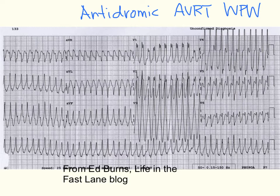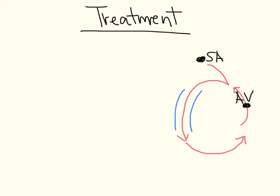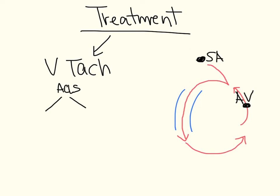The problem is that another very potentially dangerous rhythm also looks like this — fast, wide, and regular — and that would be ventricular tachycardia. Without knowing exactly whether the patient has Wolff-Parkinson-White or not, this has to be presumed to be ventricular tachycardia. Therefore, in terms of treatment, we want to presume this is V-tach first. We'll go through a regular ACLS algorithm, deciding whether the patient is stable or unstable, and ultimately we'll likely end up using electrical cardioversion.